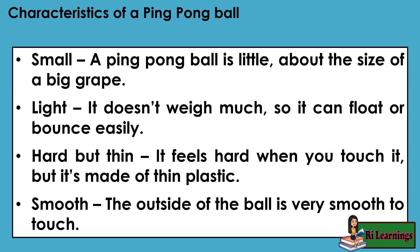Characteristics of a ping pong ball: Small — a ping pong ball is little, about the size of a big grape. Light — it doesn't weigh much, so it can float or bounce easily. Hard but thin — it feels hard when you touch it, but it's made of thin plastic. Smooth — the outside of the ball is very smooth to touch.